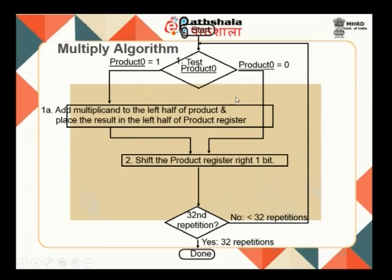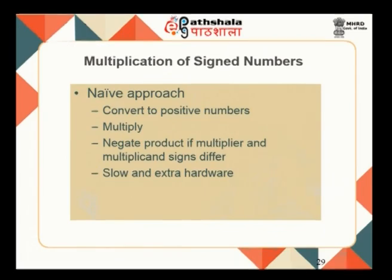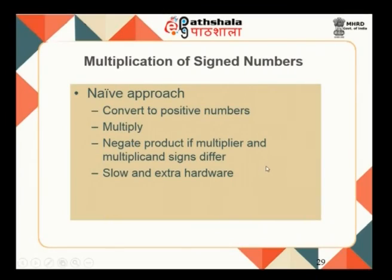The sequential multiplier algorithm: initially the product is 0; check the multiplier bit, add the multiplicand if it is 1 then shift right, or add zeros and shift right if it is 0. Repeat 32 times, and the final product is available in the product register. For signed number multiplication, the simplest approach is to treat both numbers as positive, multiply, and then fix the sign of the result based on whether the signs of the two operands are the same or different.